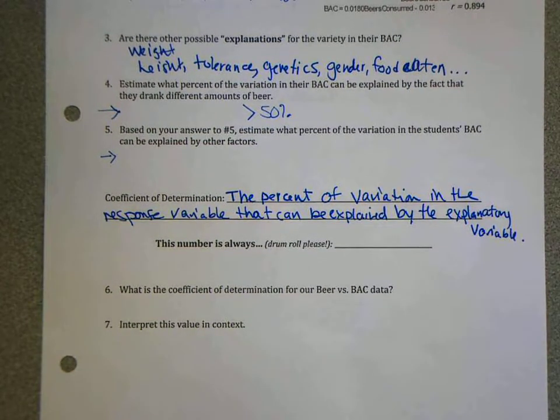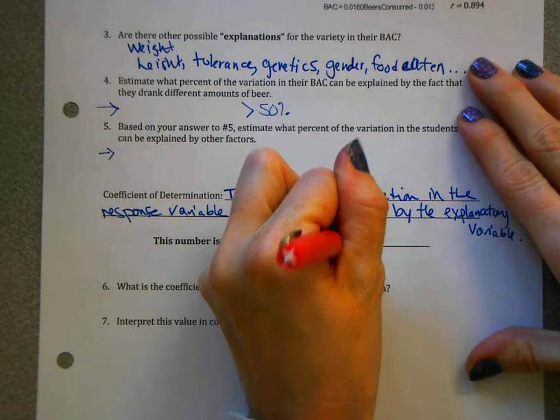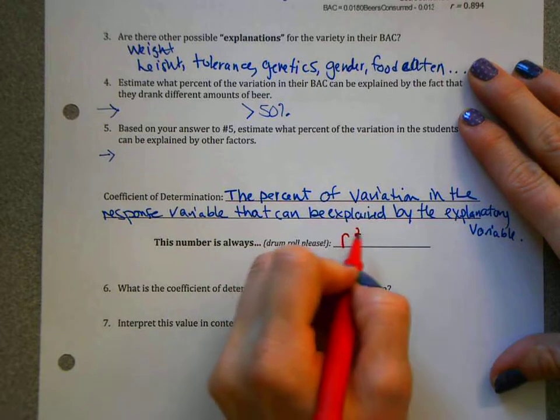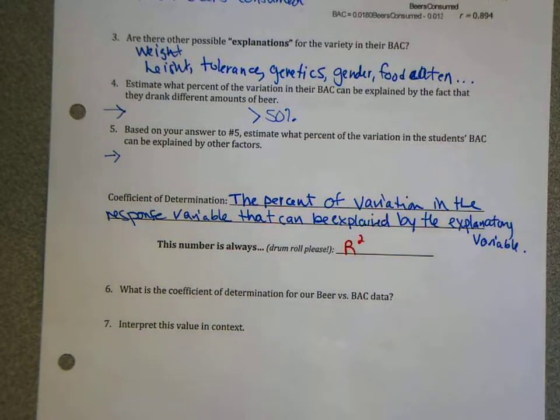I'm going to pause in my talking so you can get that down. So in a linear relationship, this percent of variation in the y variable that can be explained by the x variable is always R squared. It's actually oftentimes a capital R, to be honest. But it's actually literally just your correlation squared. So it's a very easy calculation.